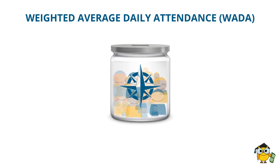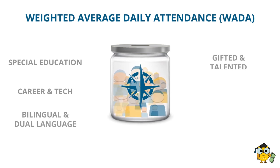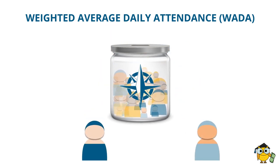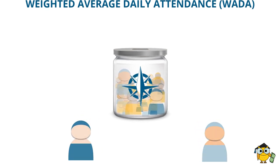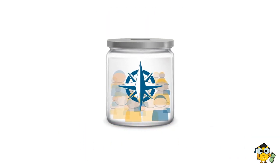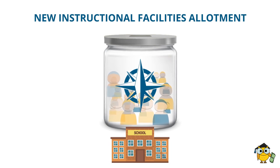These characteristics include things like special education, career and technology, bilingual and dual language, gifted and talented, early education, and students at risk of dropping out. But some of these students also do not go to school every day, so the jar shrinks a little again. Transportation is another factor that increases the size of the jar. And the jar grows as a district opens a new school — not money to build the school, but startup costs for opening a new school.